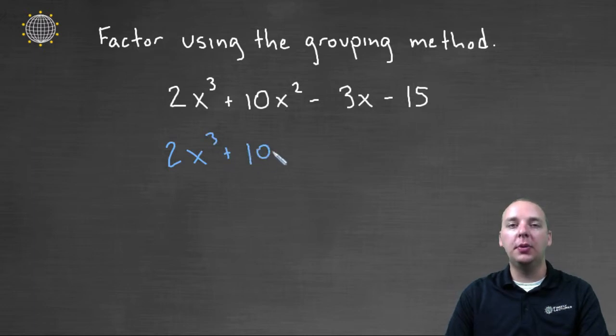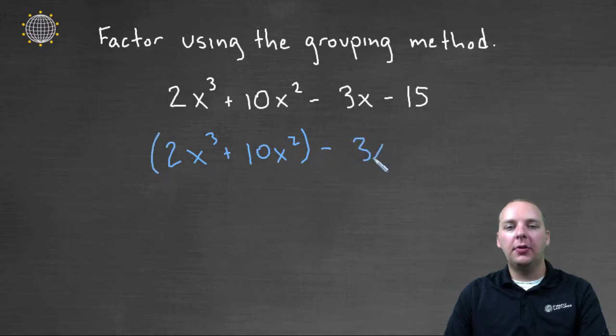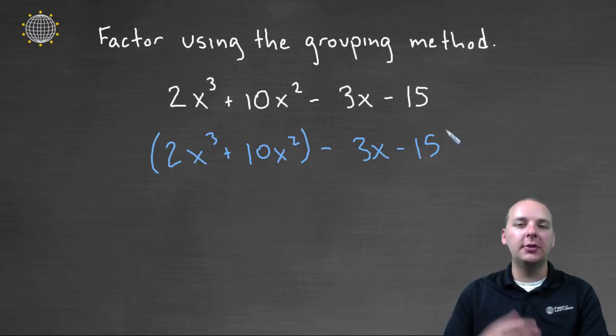So we'll take the 2x³ + 10x² and we'll group those terms. Then we have -3x - 15, and then we typically group the last two terms, but there's going to be a small problem in doing that.